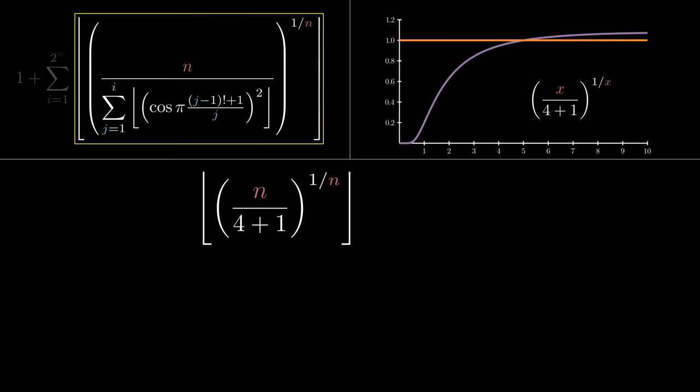What happens to this curve for larger values of x? It looks like it might keep going up, but if we increase the range, we see that it hits a maximum and then starts coming back down. That means that when we take the floor, we'll get 0 for integer values of x up through 4, and 1 for integer values of x greater than 4.